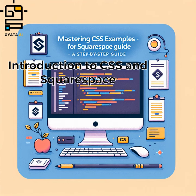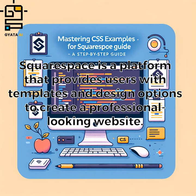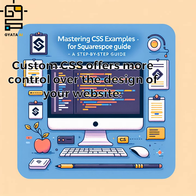Introduction to CSS and Squarespace. Cascading Style Sheets — CSS — is a programming language used to style HTML elements. Squarespace is a platform that provides users with templates and design options to create a professional-looking website. Custom CSS offers more control over the design of your website.